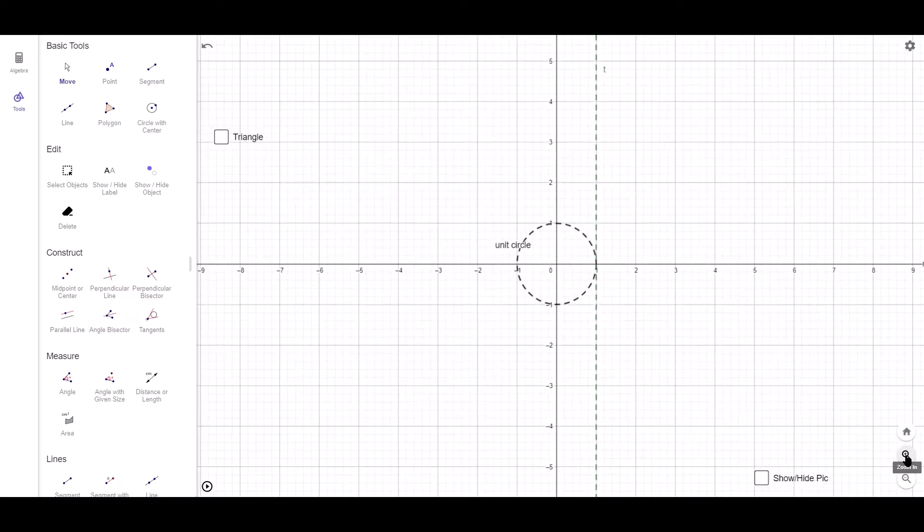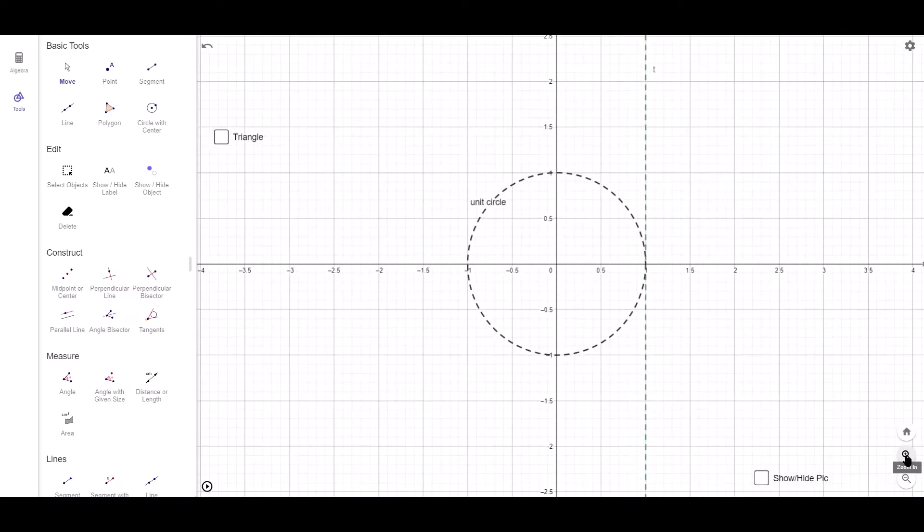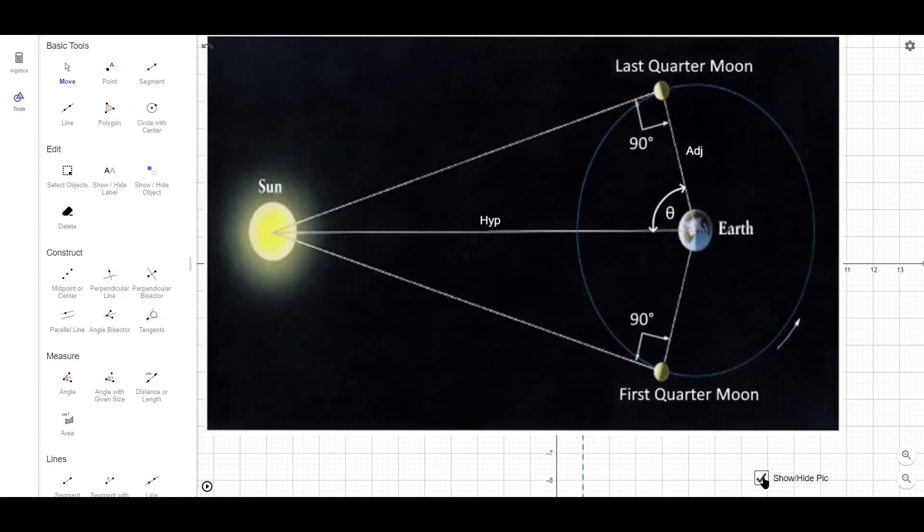Here I have a unit circle, that is to say it has a radius of 1, and tangent to it is this line T. This is a typical textbook image showing the Earth, Sun and Moon during the Moon's first and last quarter phases.